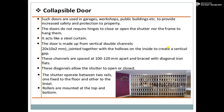The next type is the collapsible door. Such doors are used in garages, workshops, and public buildings to provide increased safety and protection to the property. The door does not require hinges to close or open, and acts like a steel curtain. It is made from vertical double channels jointed together with a hollow inside. These channels are spaced at 100 to 120 mm apart and braced with diagonal iron flats, which allow the shutter to open or close. The shutter operates between two rails — one fixed to the floor, the other to the lintel — with rollers mounted at top and bottom.